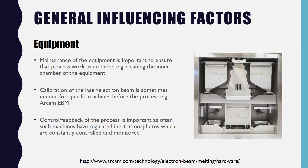Lastly, there is also control and feedback of the process, done by the machine automatically, and you as the human operator have to ensure that the machine is functioning properly. For example, the machine automatically regulates the inert atmosphere or the vacuum condition. You want to ensure that all feedback parameters are within specifications.